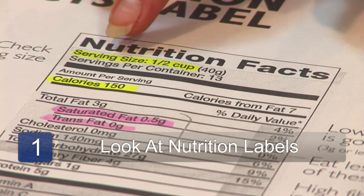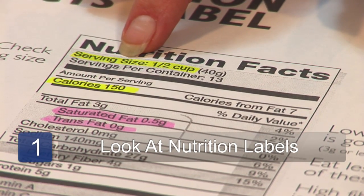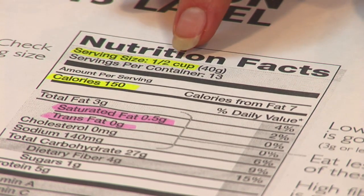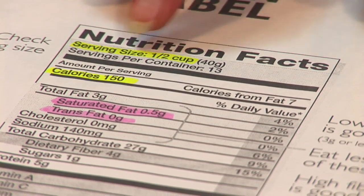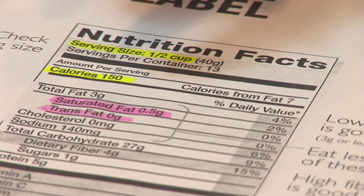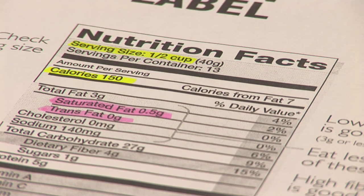When you're counting calories, you're going to look at the nutrition label. The first thing you want to look at is the serving size that the label is referring to. In this case, it's a half a cup of the food. And then simply look at how many calories in that half a cup. In this case, it's 150 calories. So it's very straightforward.